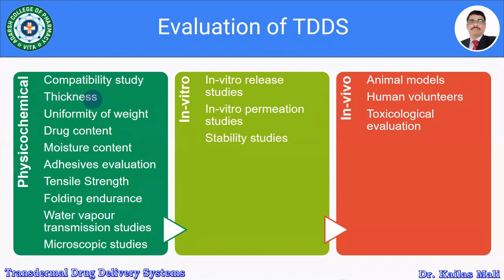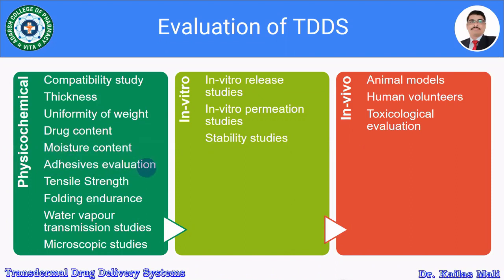The thickness of the patch should be measured using suitable equipment. Uniformity of weight is measured using a balance. Drug content should be determined with the help of a suitable instrument such as a UV-visible spectrophotometer. Moisture content can be assessed with the help of a desiccator, which gives an idea about the stability of the API in the product.